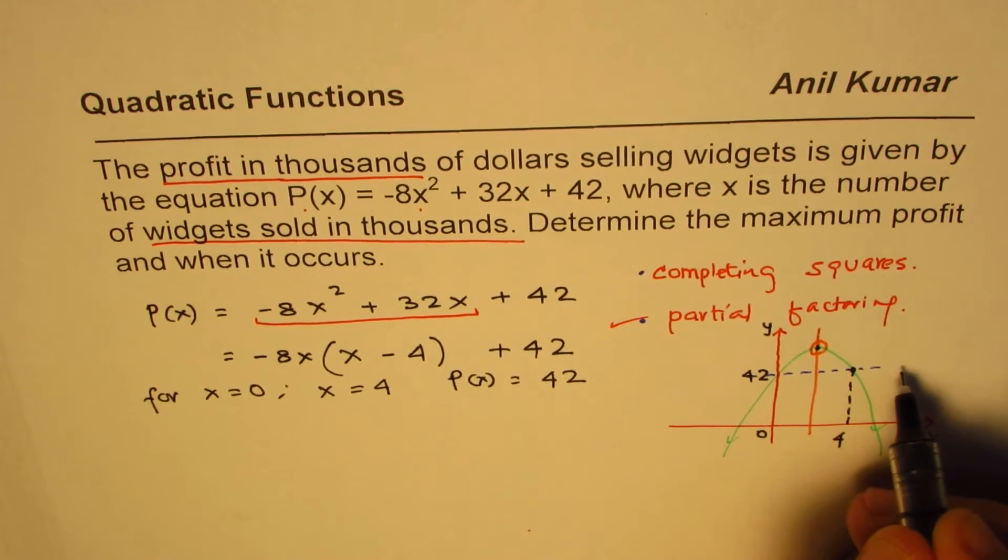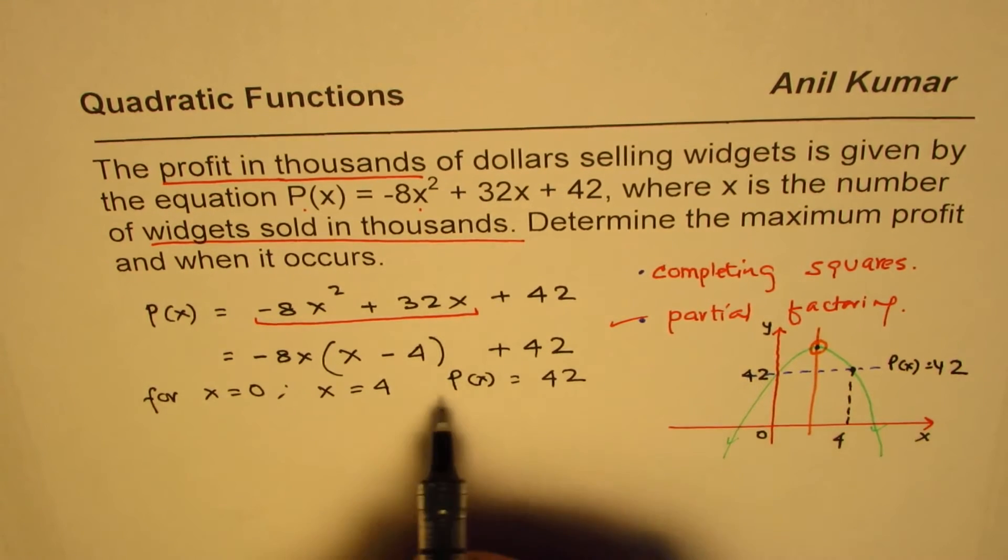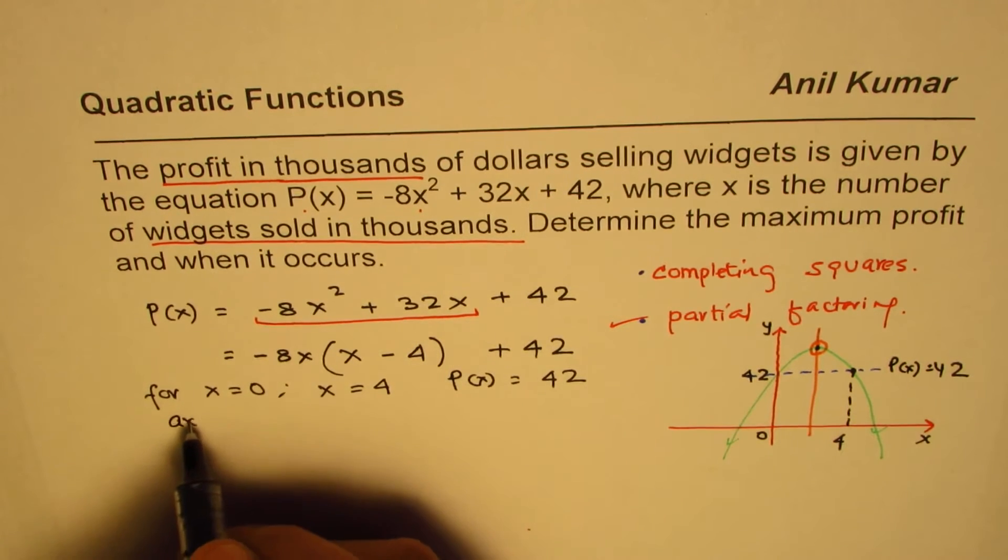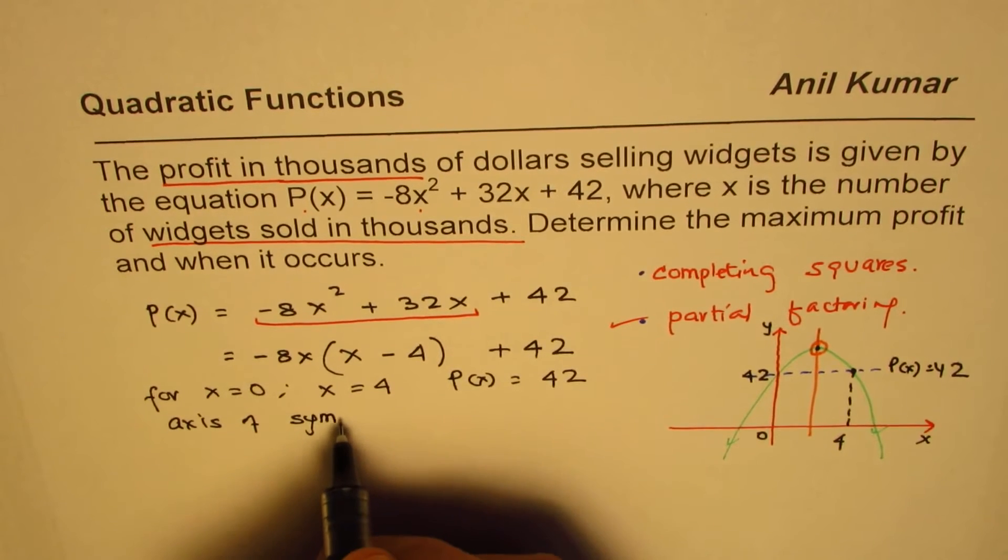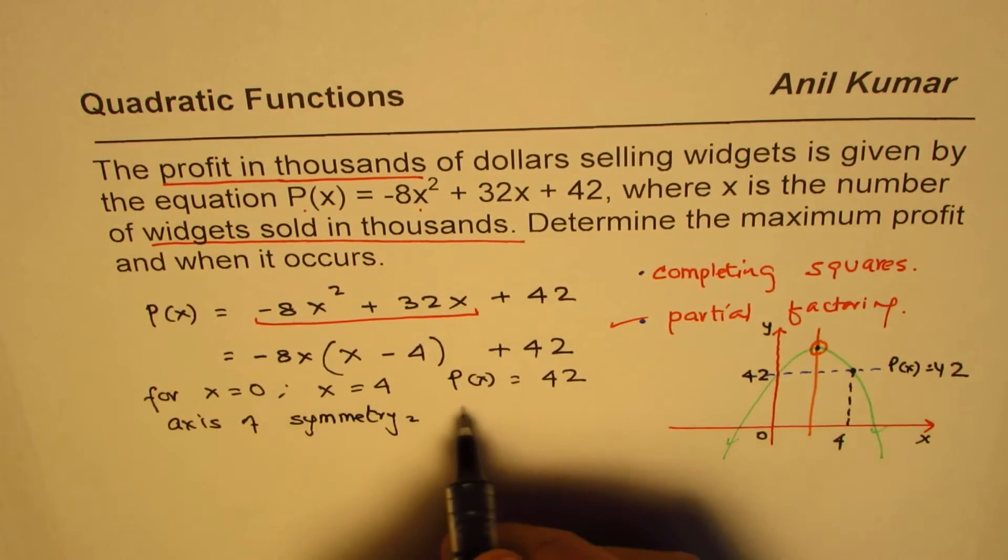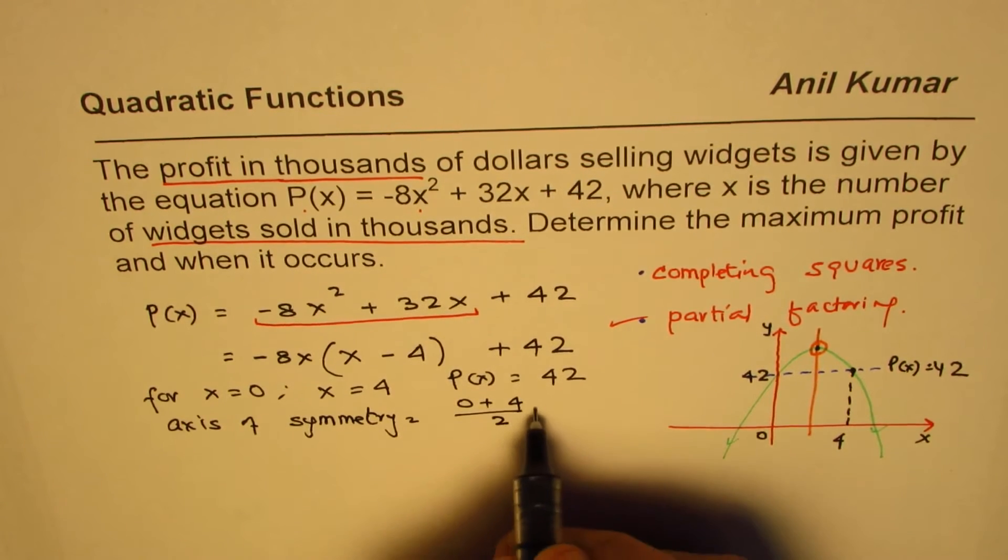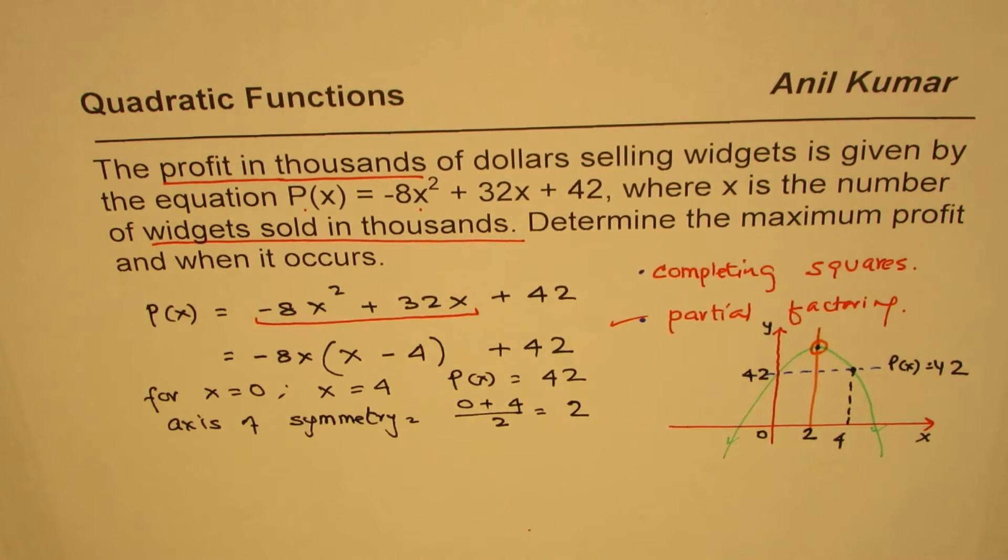Now midway between them, that means axis of symmetry, is where? Axis of symmetry will be midway. So we'll add them, 0 and 4, and divide by 2. So it is at 2. So this point here is 2, x equals to 2.